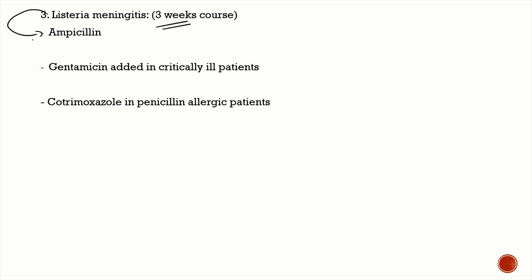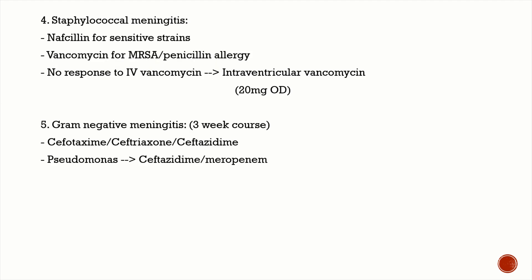For Listeria meningitis, antibiotics are given for three weeks. The drug of choice is ampicillin; if the patient is allergic to ampicillin, use cotrimoxazole. In critically ill patients, add an aminoglycoside such as gentamicin.